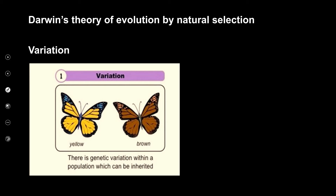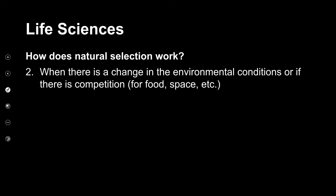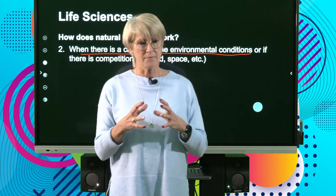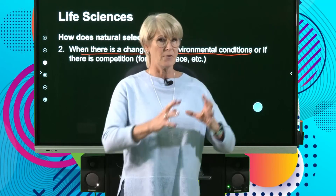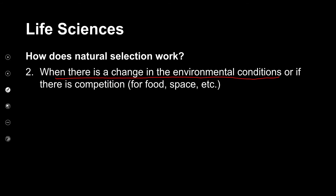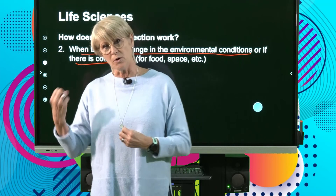In our example, we have the yellow butterfly and the brown butterfly — there is genetic variation within the population. When there's a change in environmental conditions that favors a certain characteristic, and there's competition for food, space, and other things, certain organisms will survive and others won't.